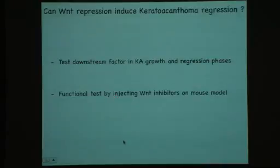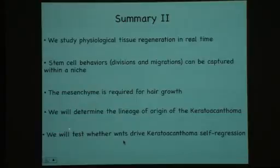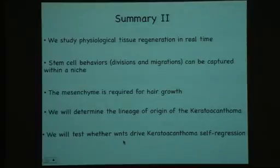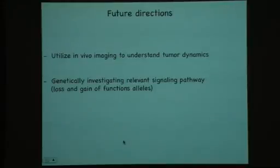They are also functionally testing, by injecting inhibitors, whether we can induce the precocious regression of these tumors. The idea behind this project is that if we can understand how keratoacanthoma regulates its growth and regression, and identify specific signals that induce regression, that might be applicable to tumors that do not regress. In future directions, we aim to combine the in vivo imaging setup with tumor dynamics, and pursue genetic analysis of specific pathways — loss of function for BMP and gain of function for Wnt — to understand in a cleaner way how tumor insurgence and hyperproliferative phenotypes arise.